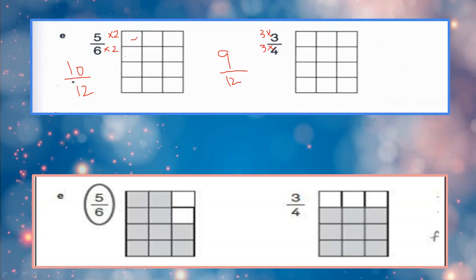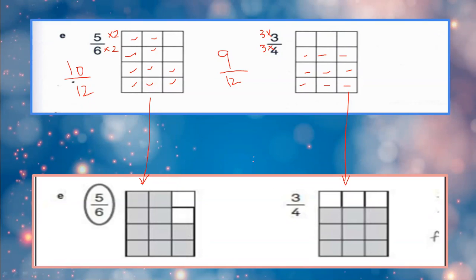Select any 10 of the boxes and color them, leaving 2 uncolored. In the second grid, color 9 boxes and leave 3 uncolored. Now which is the greatest? 5 upon 6 or 3 upon 4? Basically it is 10 upon 12 versus 9 upon 12. Make the denominator the same — 10 upon 12 is greater. That is why we are circling 5 upon 6.